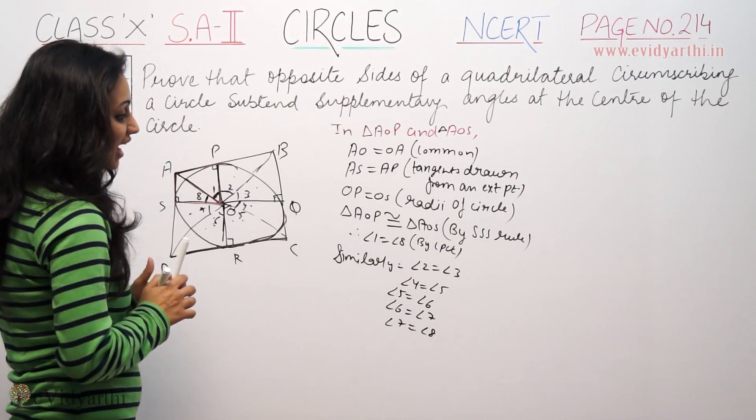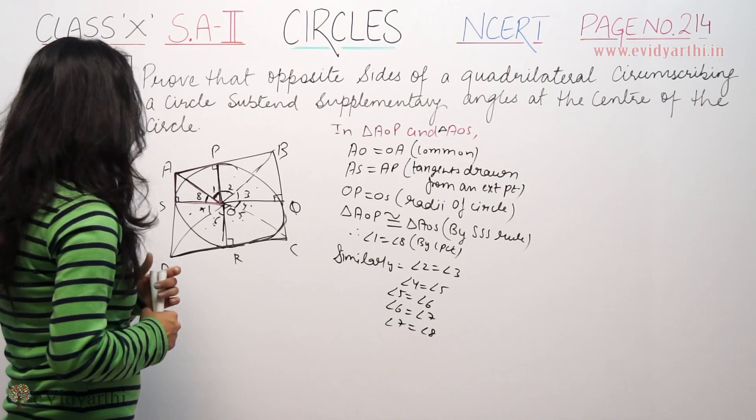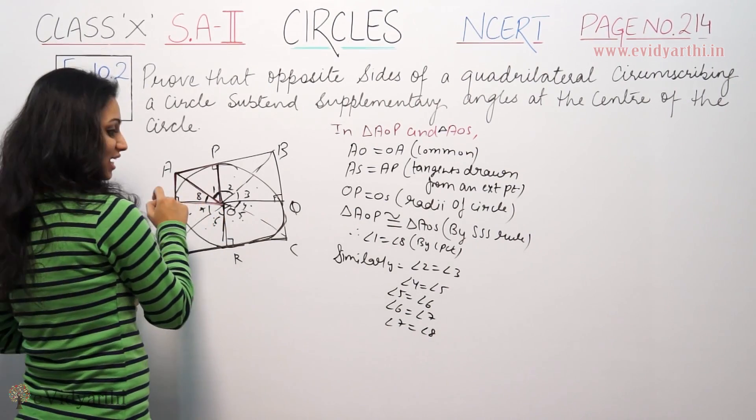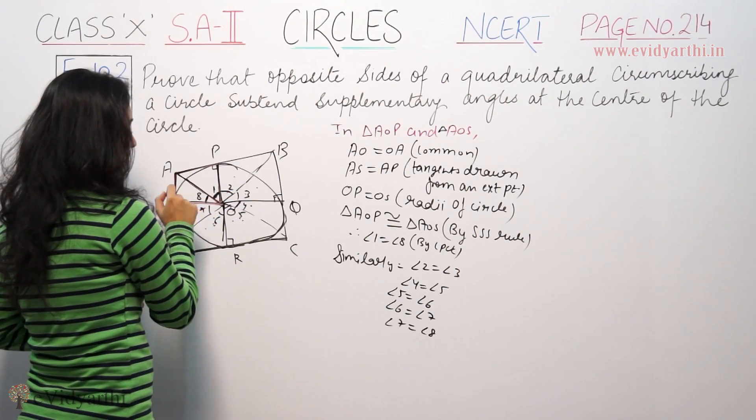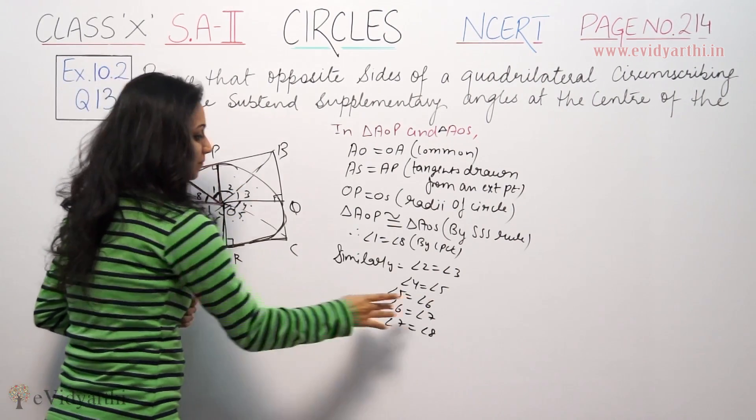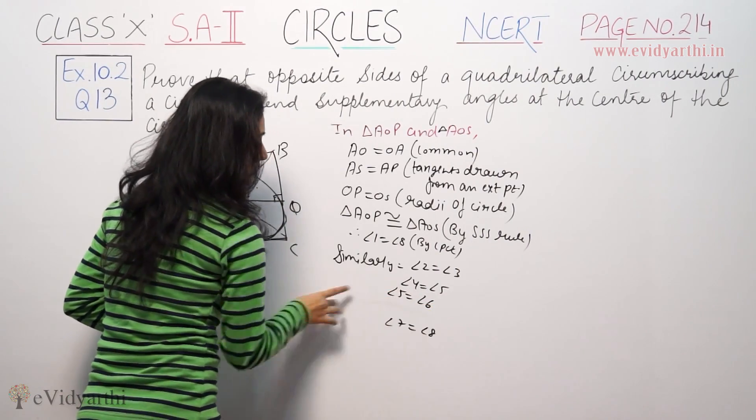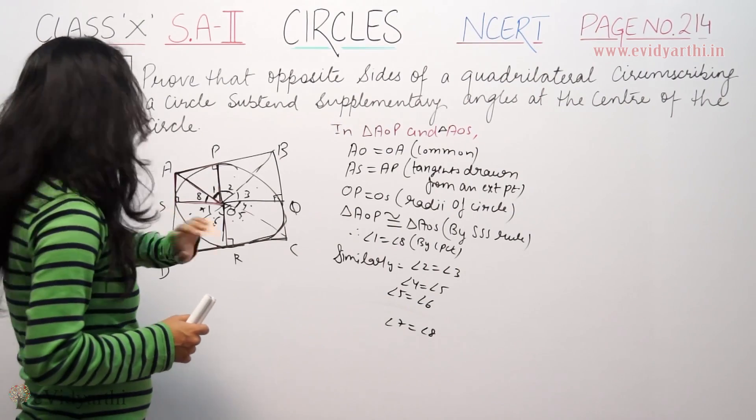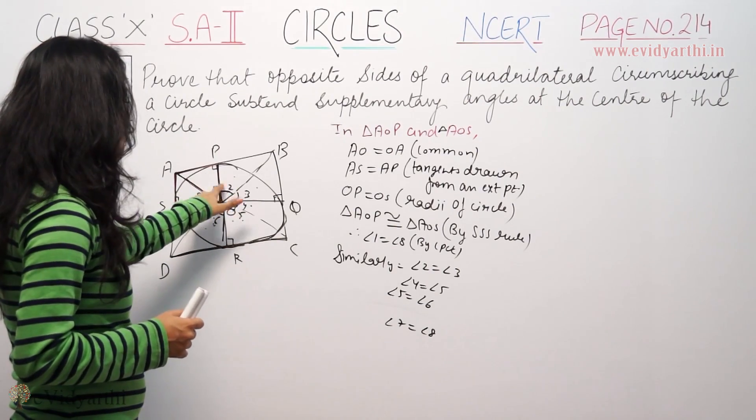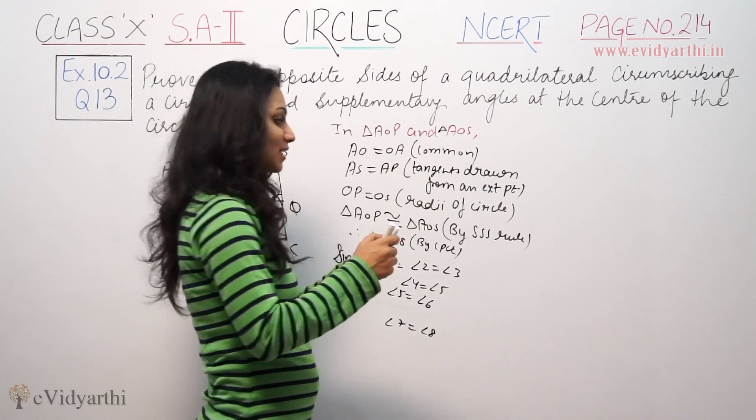So these angles are equal in pairs. Now when we go around the circle at the center position, we have to add all angles around the center.